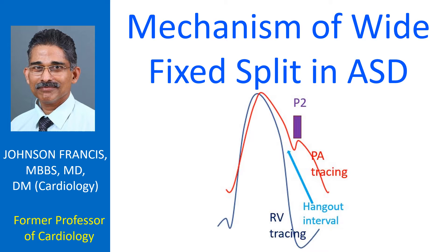Right ventricular output does not change because the change in left-to-right shunt with respiration balances the change in right ventricular inflow due to change in venous return. In inspiration, when venous return increases, the left-to-right shunt across the atrial septal defect decreases, and vice versa.